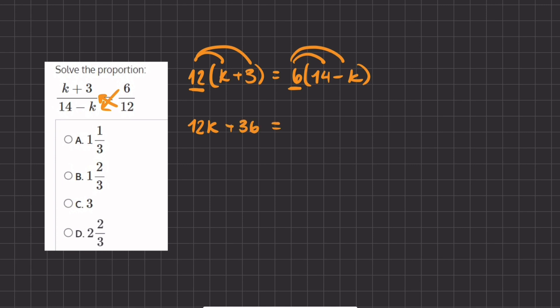Equals 6 times 14, which will give us 84, and 6 times negative k, which will give us negative 6k.